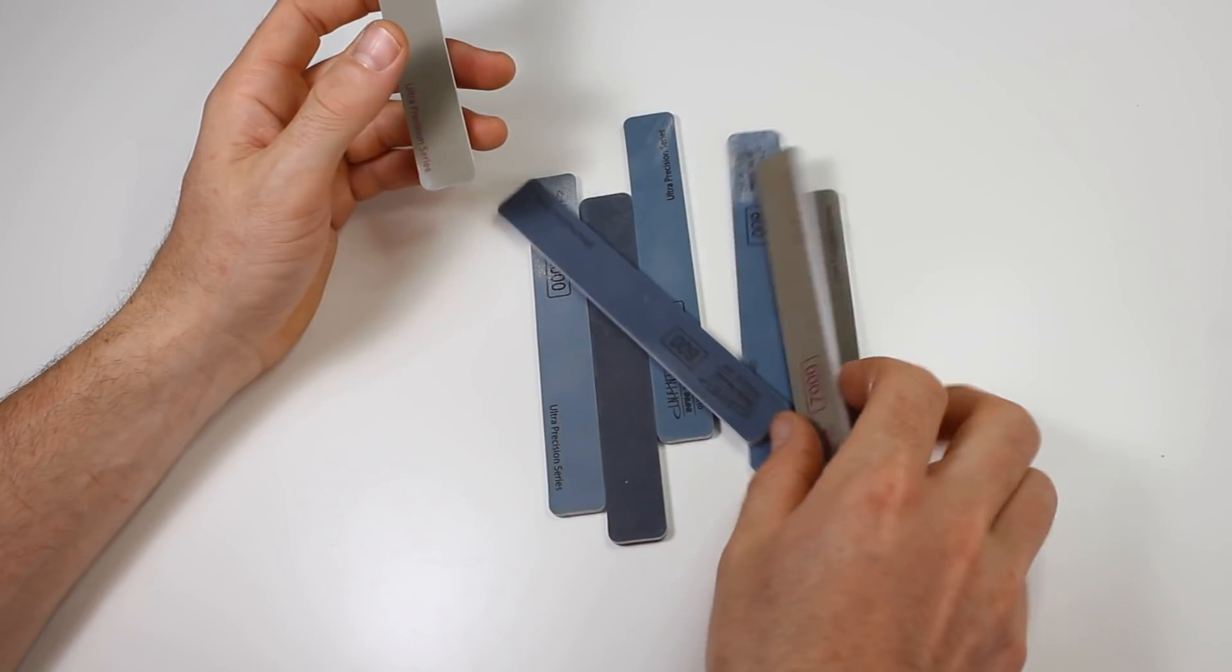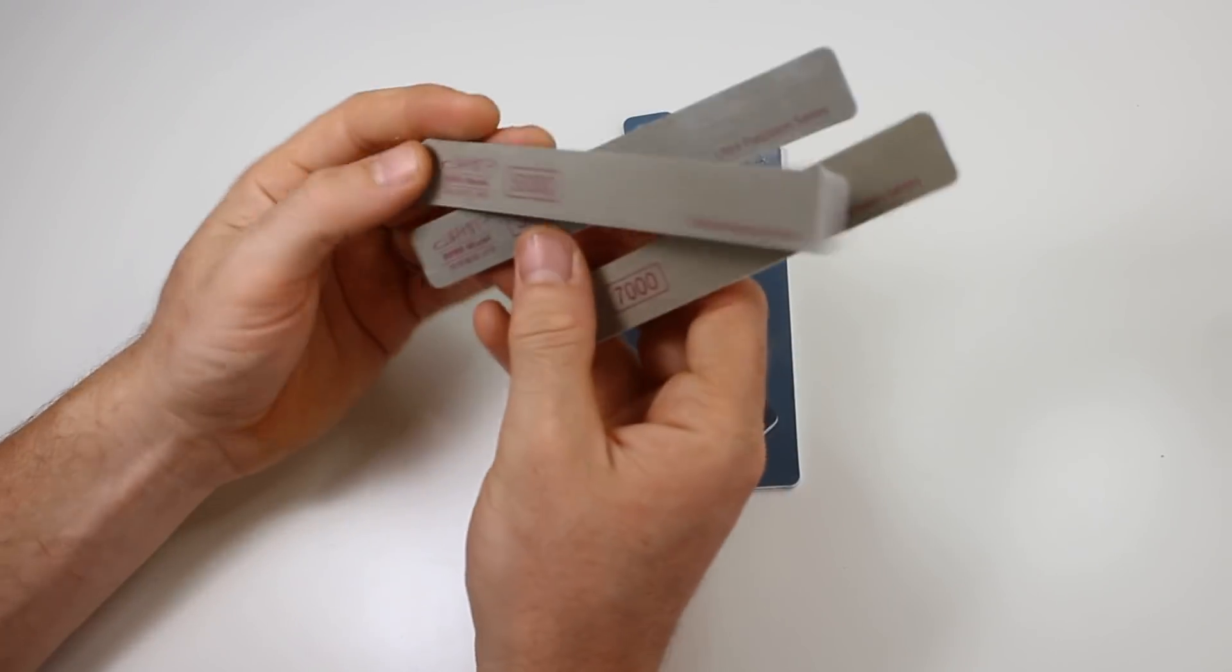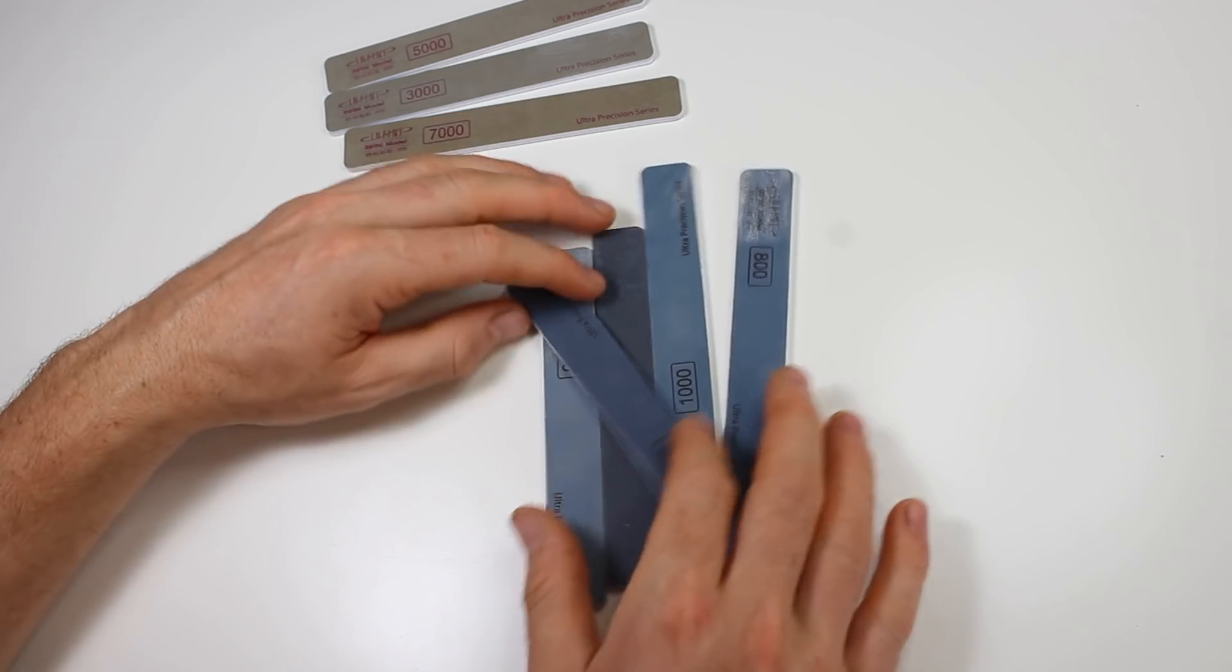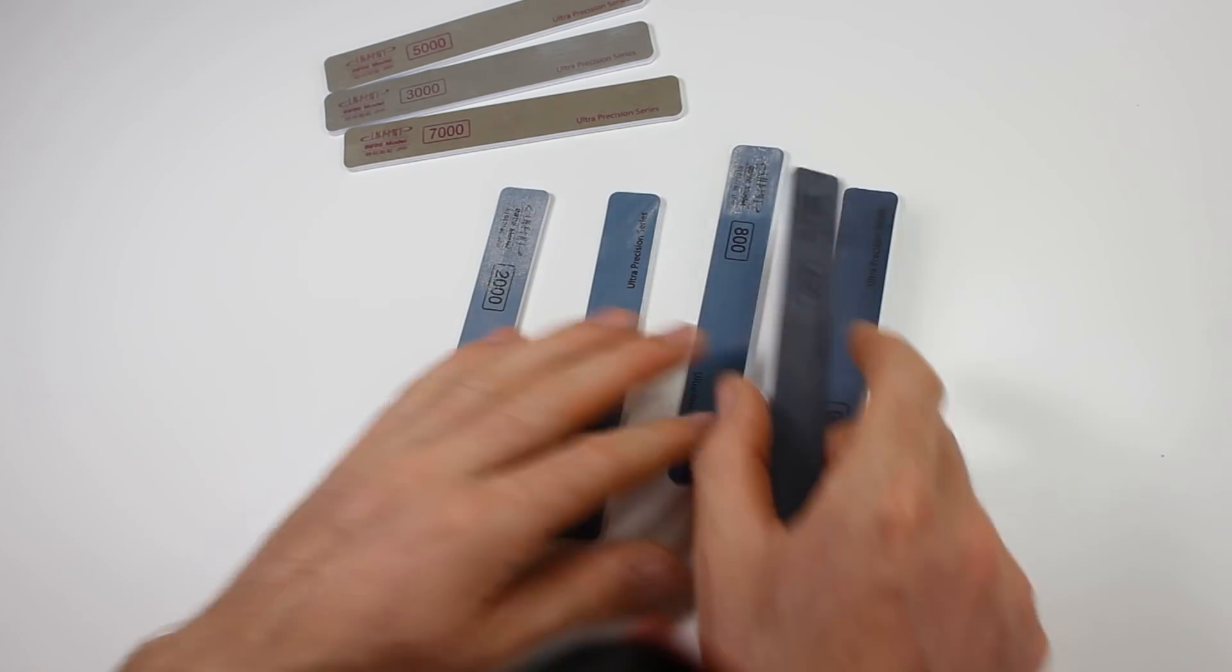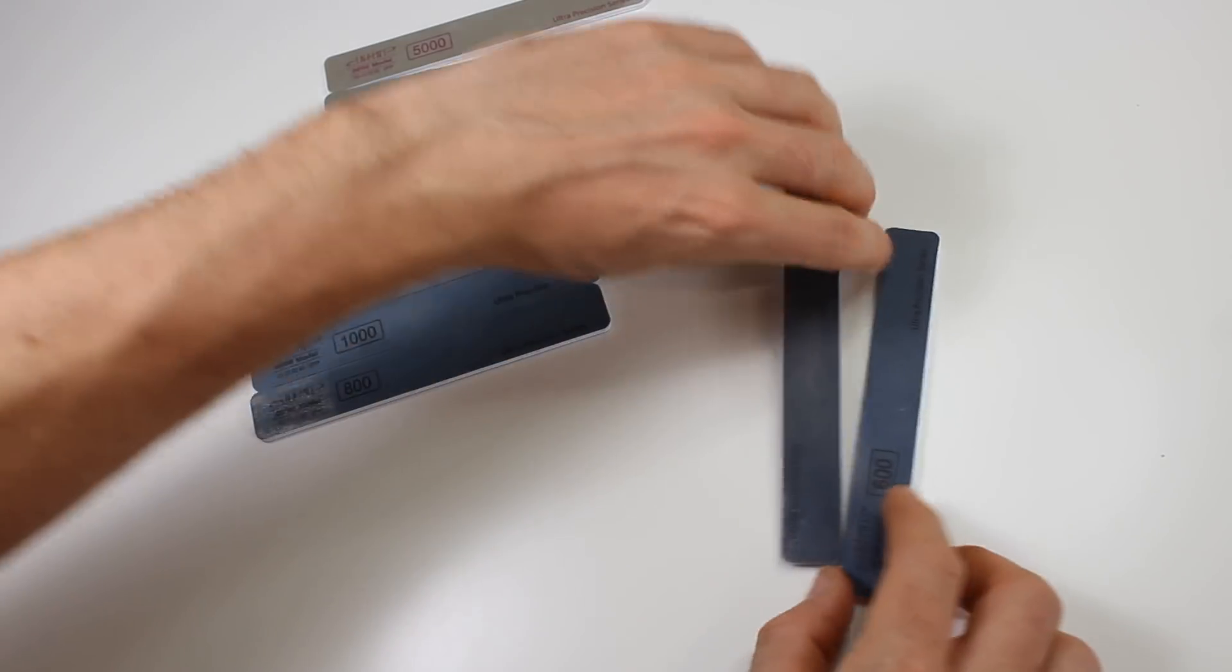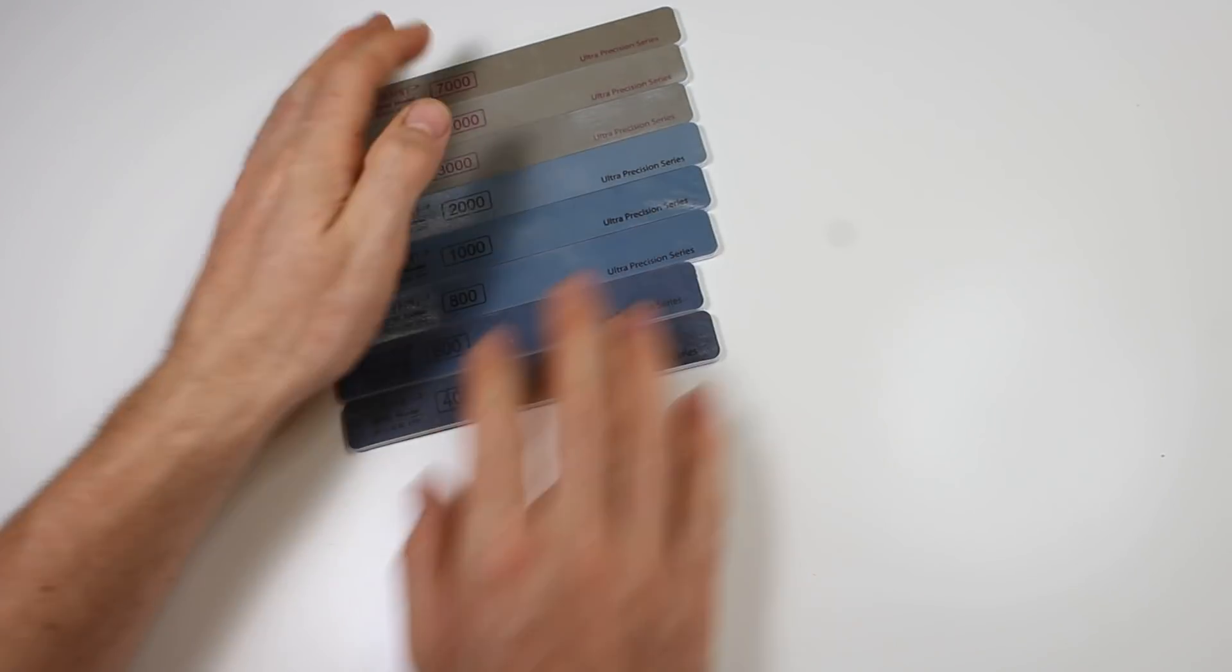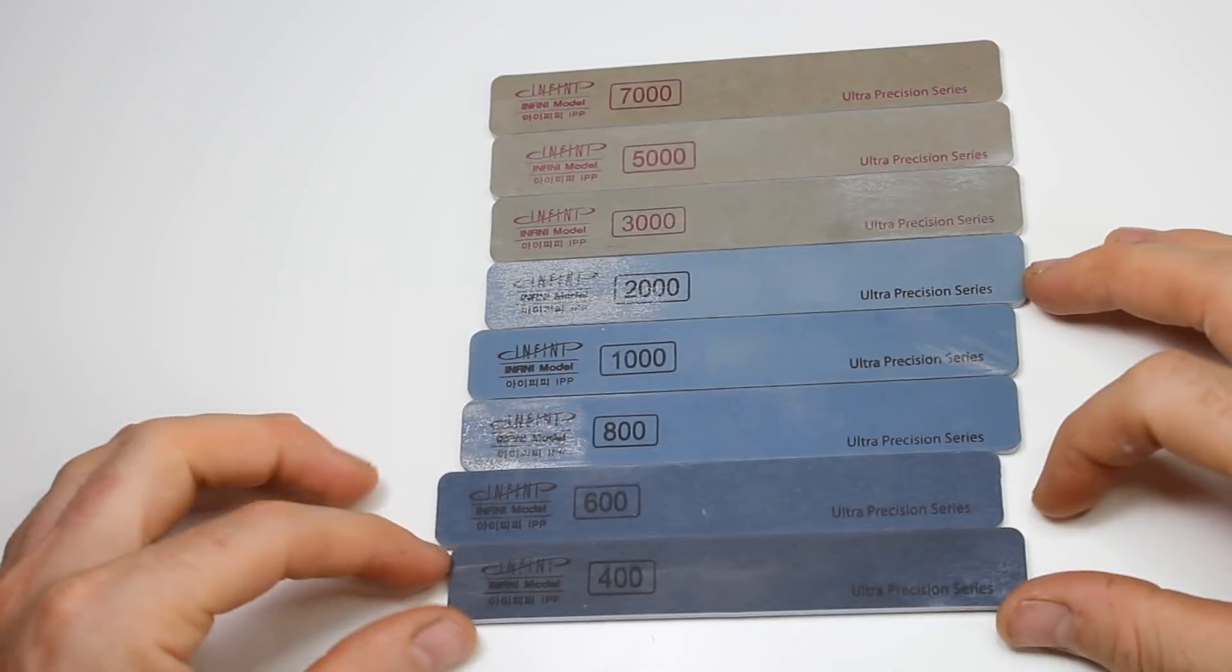So I thought we'd just have a little look at these new sanders I got in from Infini, which is their Ultra Precision series. I mentioned these in an update a month or so ago, and I think since then they've released another set as well. We run through some different grits here. It's quite extensive, running from 400 to 7,000.